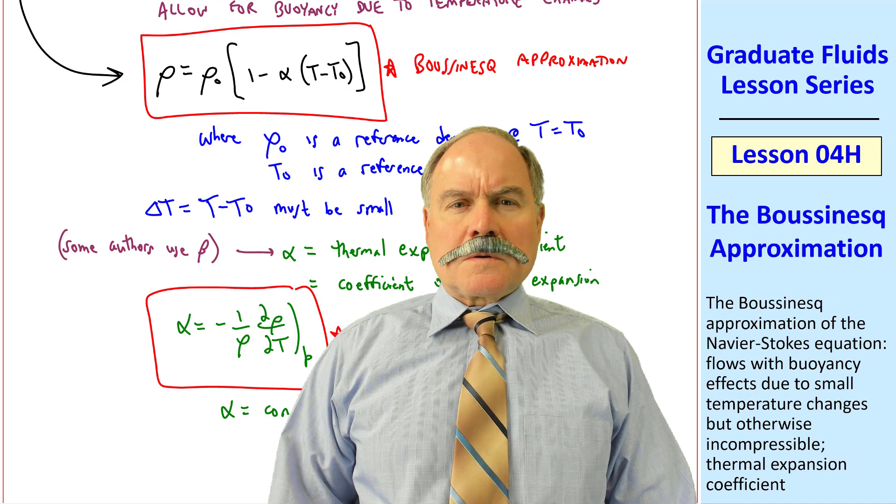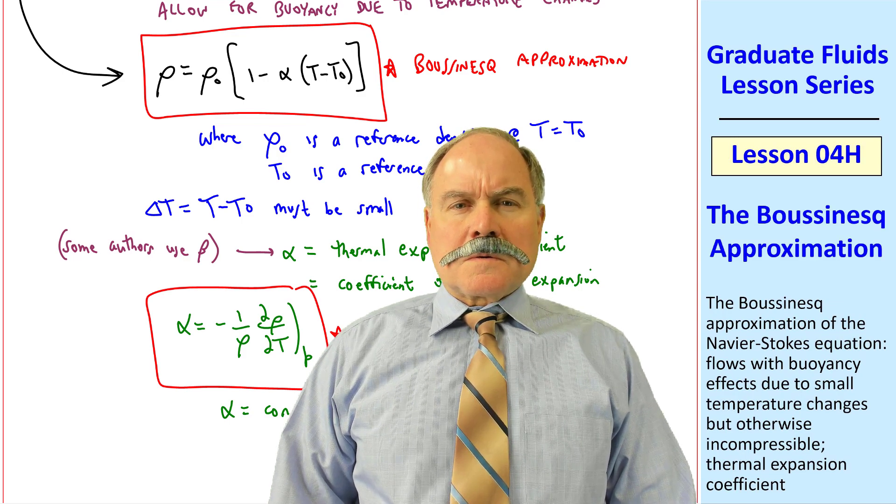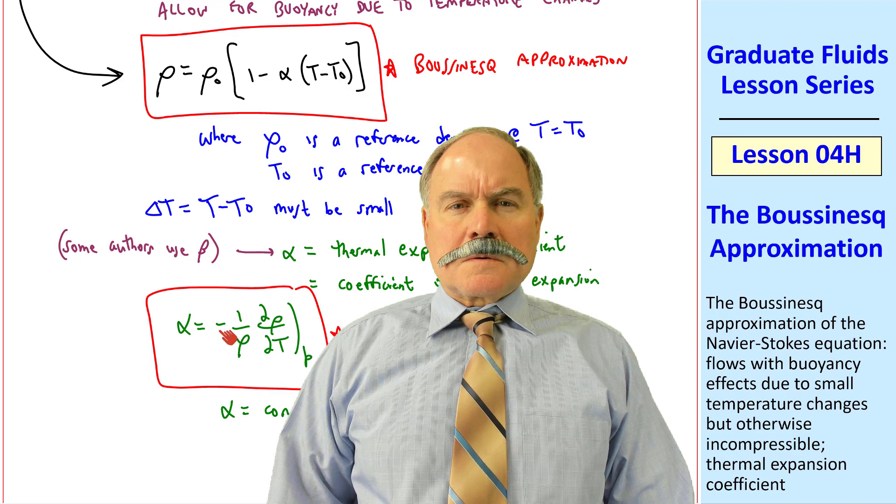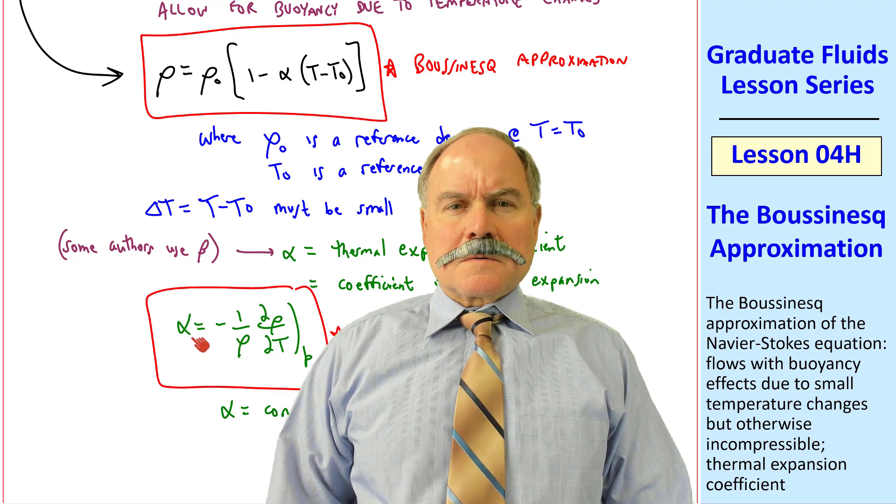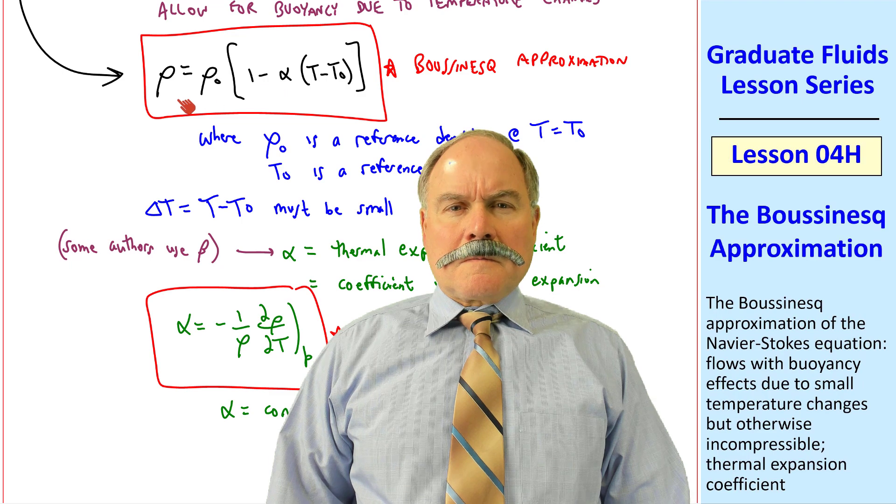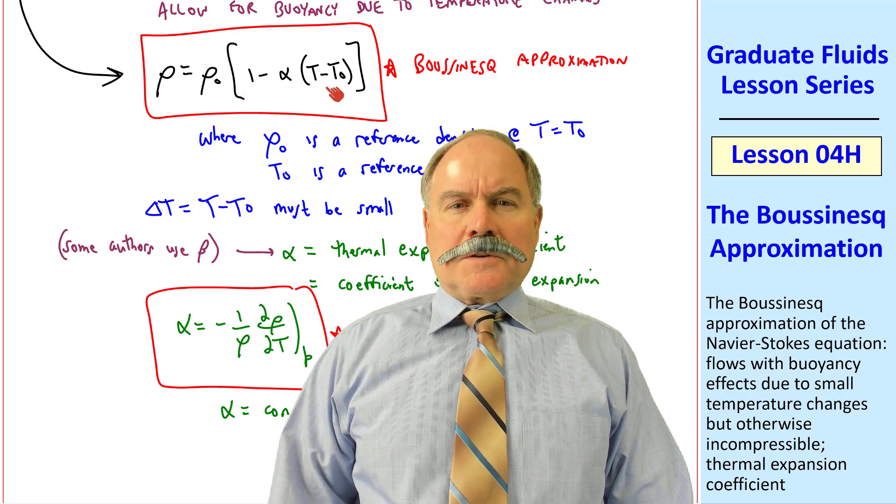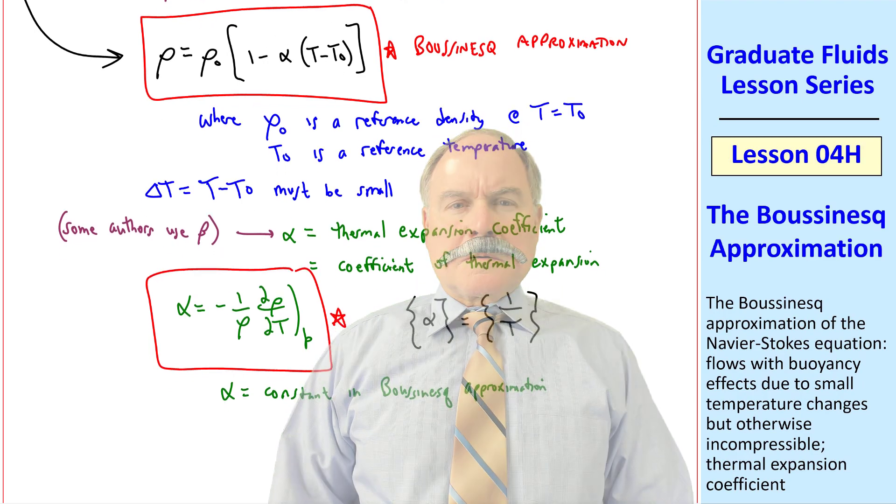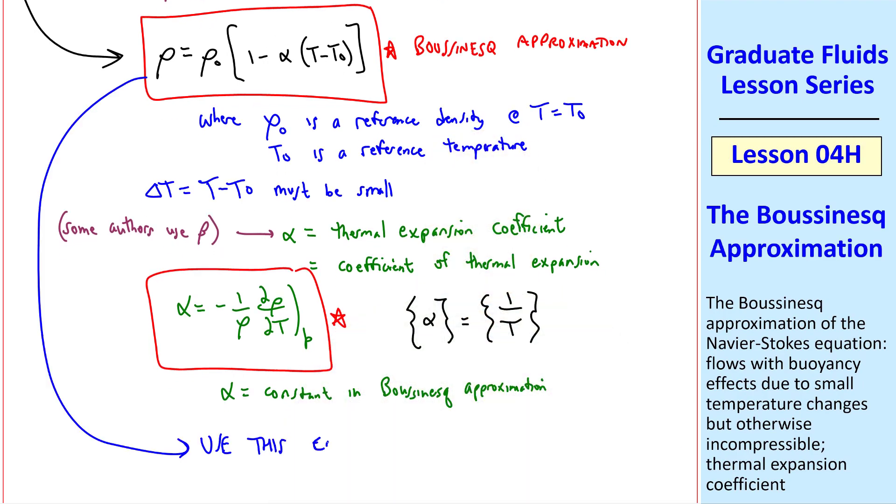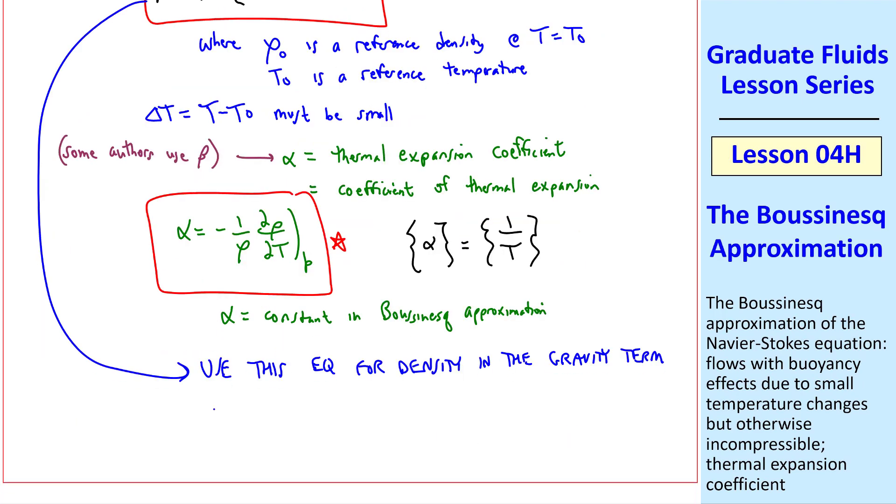That's right. We all know that warm air rises, so density decreases with temperature. The negative sign is here to make alpha a positive quantity, and the negative sign is here to make density decrease when temperature increases. So as we stated, we'll use this equation for density in the gravity term, but we'll use rho equals rho naught everywhere else. And we'll approximate other coefficients like mu and nu as constants.